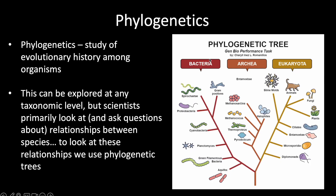Now let's talk specifically about phylogenetics — the study of evolutionary history among and between organisms. This can be explored at different taxonomic levels, such as domain or kingdom, but those levels are so broad that they don't generate many intriguing questions. So oftentimes scientists look at relationships between species or between genera.